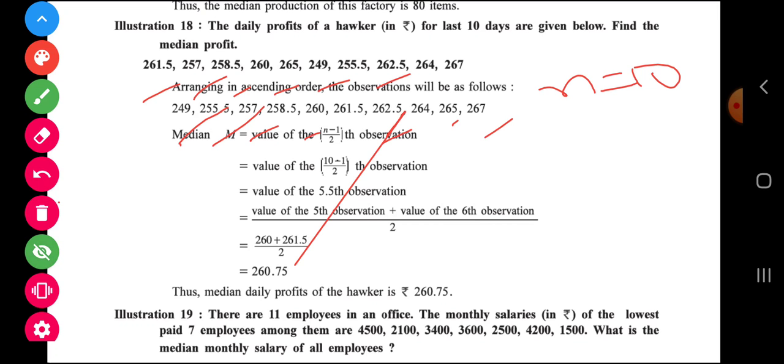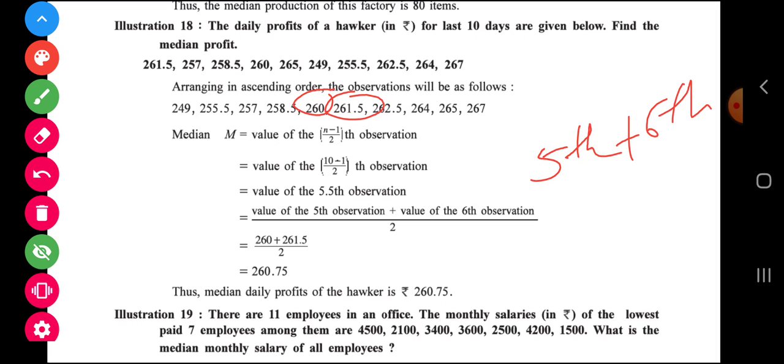Now what is observations number 5? Observations number 5, 1, 2, 3, 4 and 5. Sorry, I am ascending order. So 260 is number 5 and 261.5 is number 6. So 5th observation plus 6th observations divided by 2. So 260 plus 261.5 divided by 2.